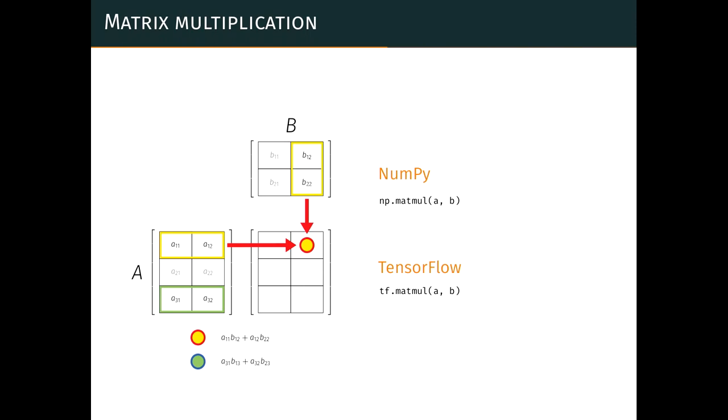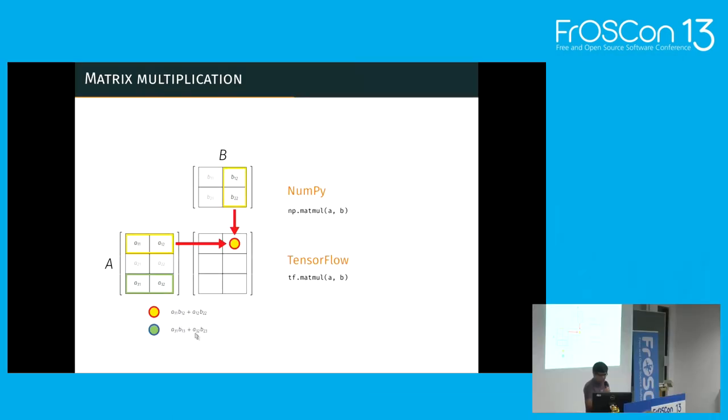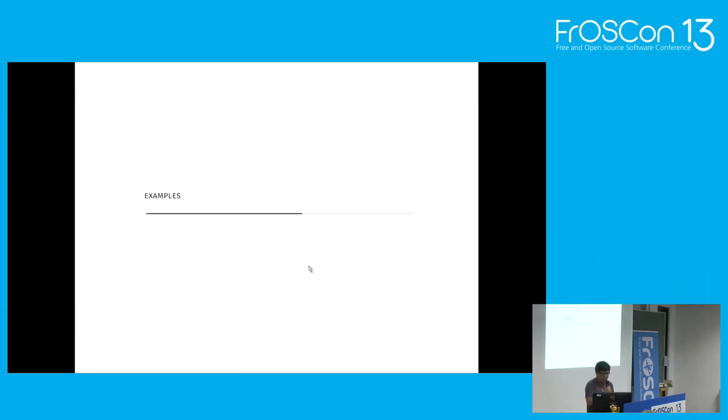Okay, so, as we know, matrix multiplication. We go from row, the column of the second matrix, and then we will get another matrix. Yeah, this is easy in NumPy and TensorFlow. Okay, so, we'll go for some examples.